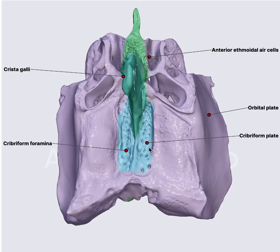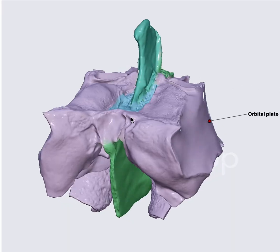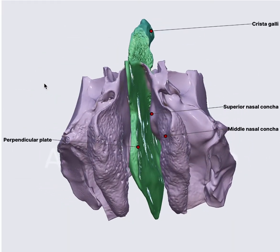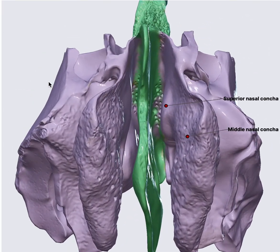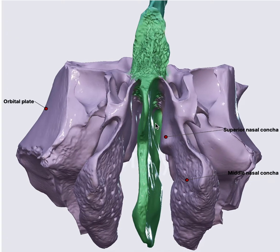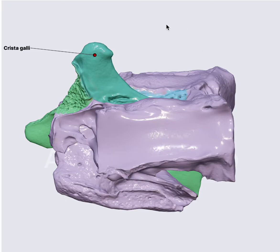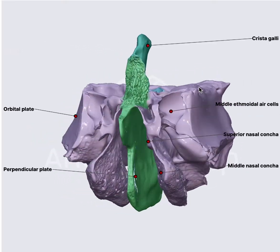The cribriform plate is a very thin horizontal structure and it harbors a lot of foramina. From these foramina the olfactory nerve traverses. Whenever there is any obstruction or occlusion in this area, the patient may complain of anosmia. The brain is situated over here. The cribriform plate forms the roof of the nasal cavity and the floor of the anterior cranial fossa.